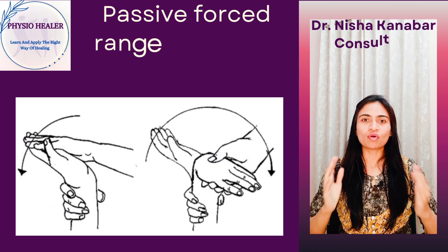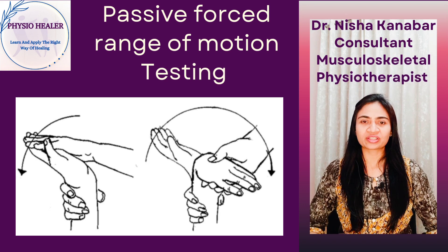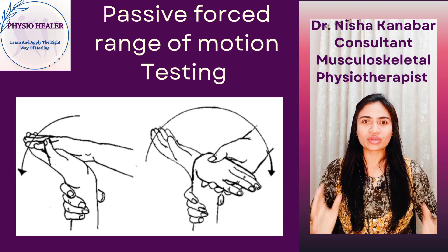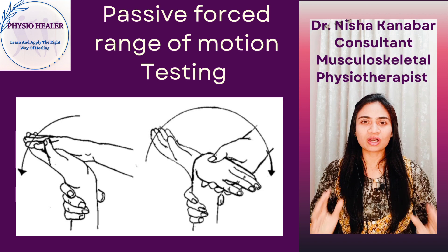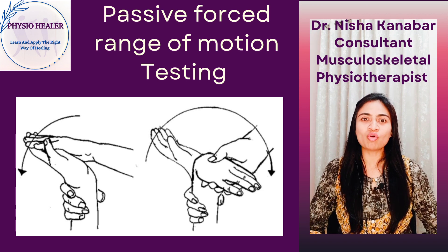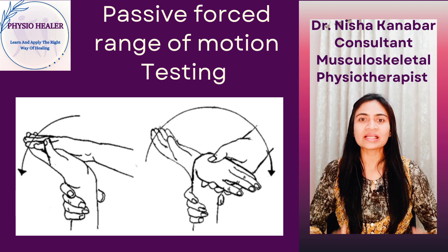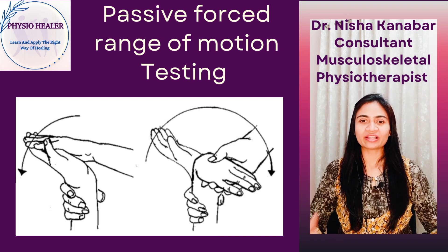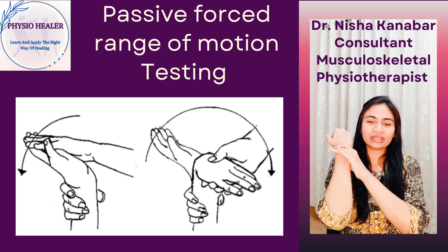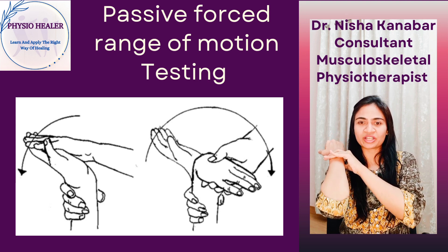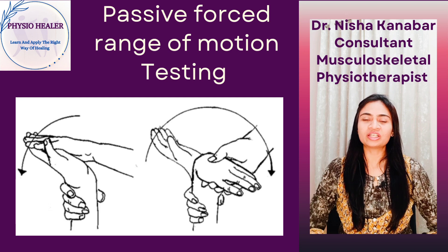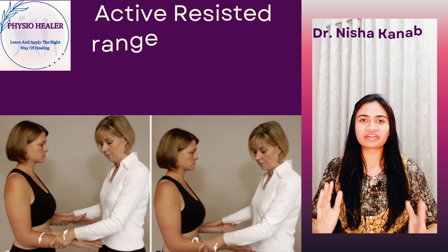Next is passive forced or over pressure range of motion testing. This is used to assess the end feel. The purpose is to gain further interpretation of any limitation of motion when the end of the available passive range is reached. The therapist applies gradual, controlled over pressure to assess the quality of tissue resistance at the end of range — called the end feel. For elbow flexion, the limb is moved passively through range and slight over pressure is applied at the end to feel the tissue resistance.